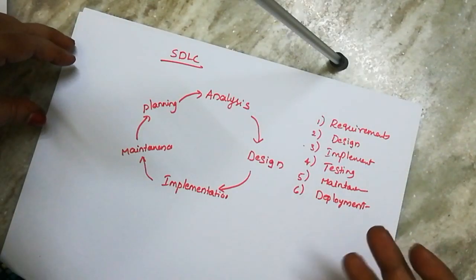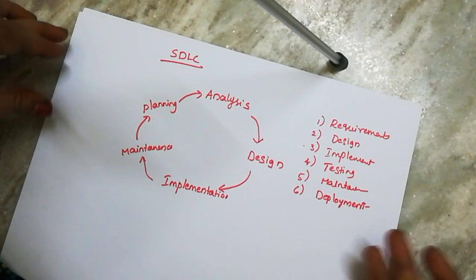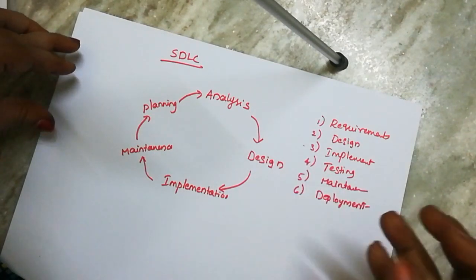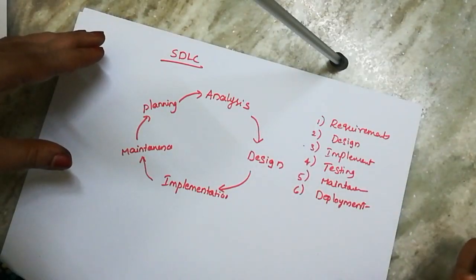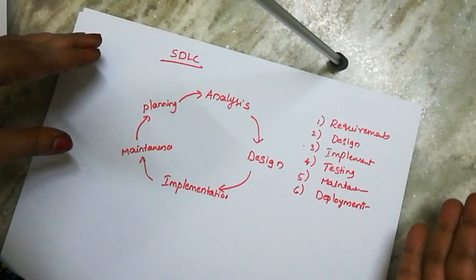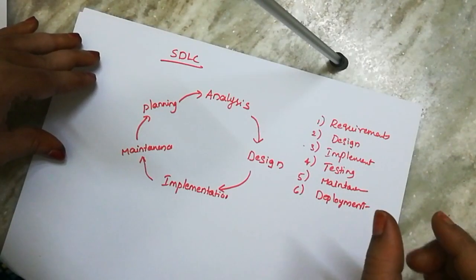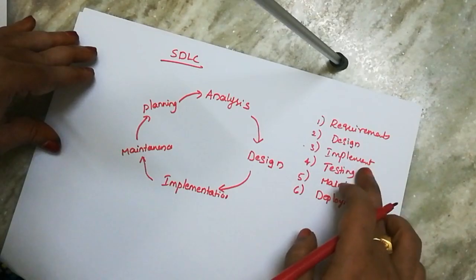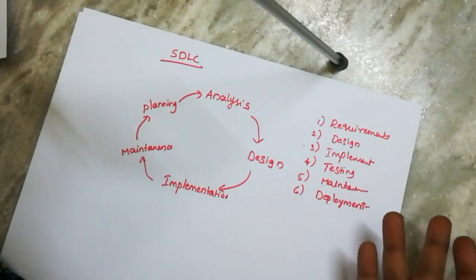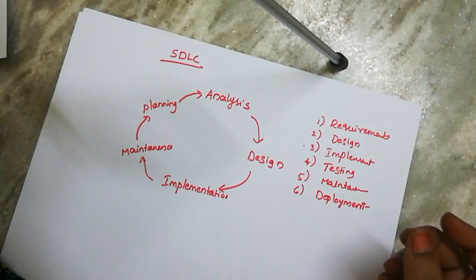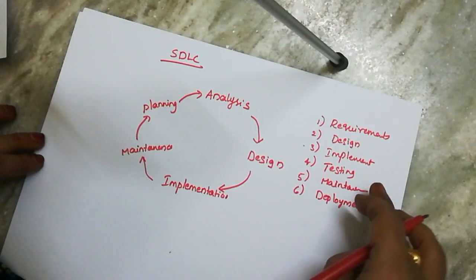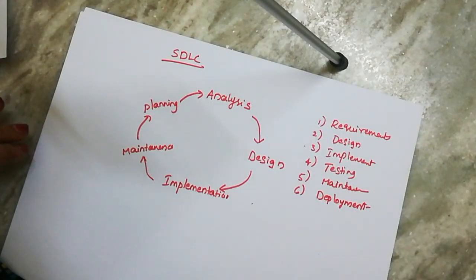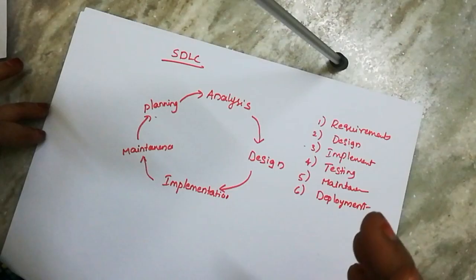In the requirements stage, we go to the customer and take requirements. In the design stage, we convert those requirements into design mode — each and every requirement is converted into a design. Then each design is converted into code in the implementation stage. Each piece of code is tested — checking for errors like compilation errors. After testing comes maintenance, then deployment — combining everything into one final software product.